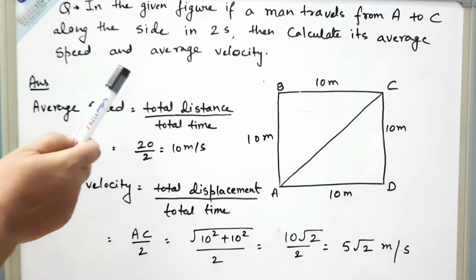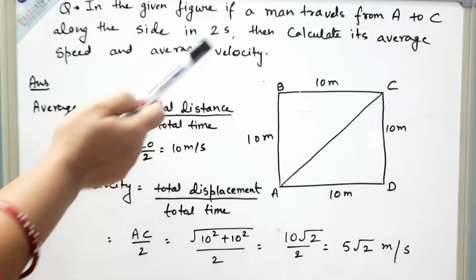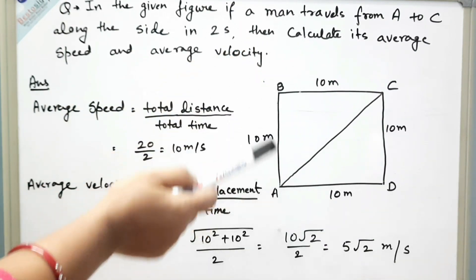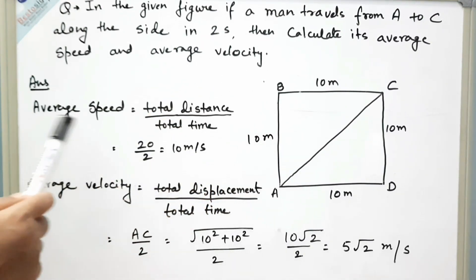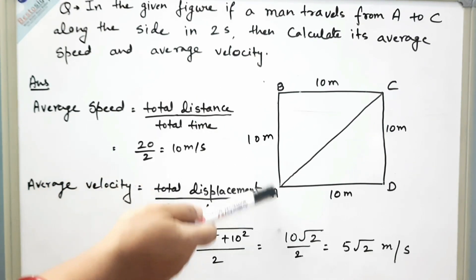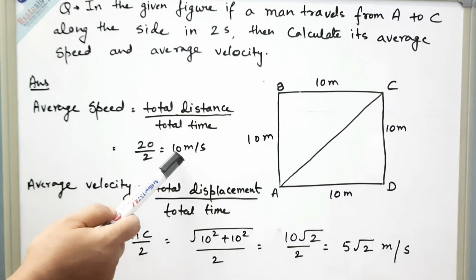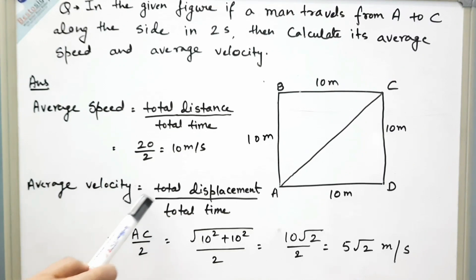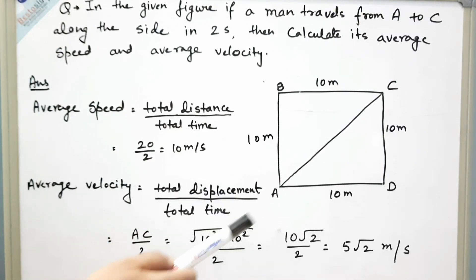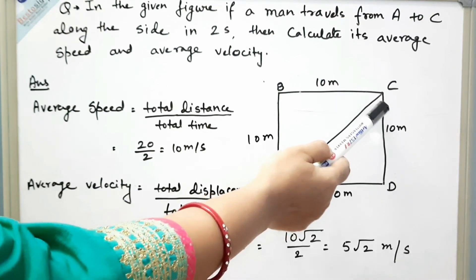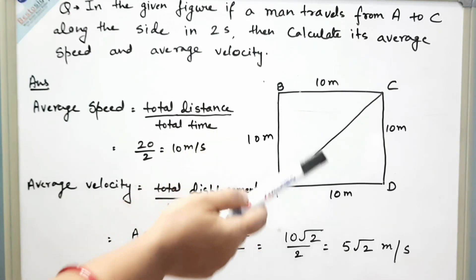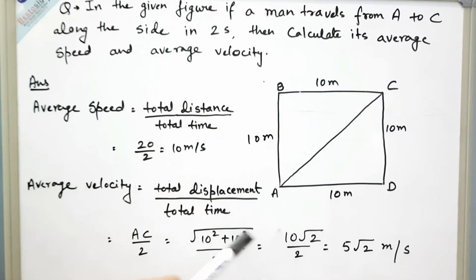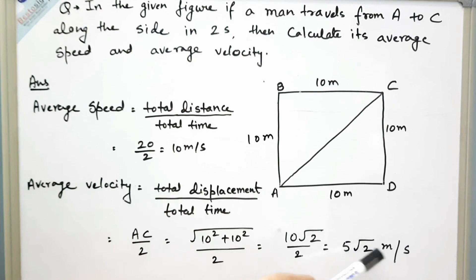Through this question we can understand the difference between average speed and average velocity. A man travels from A to C along the sides in 2 seconds. The average speed equals total distance divided by total time: (10 + 10) divided by 2, which is 10 meters per second. For average velocity, we find the displacement AC using the Pythagorean theorem, giving 10 root 2, divided by 2, yielding 5 root 2 meters per second.